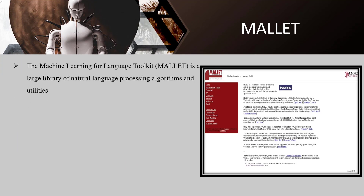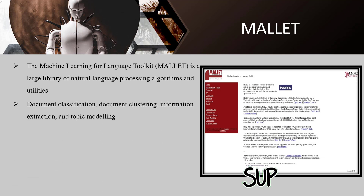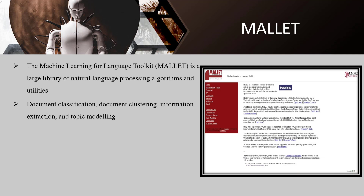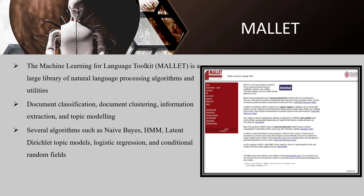MALLET, the Machine Learning for Language Toolkit, is a large library of natural language processing algorithms and utilities. It can be used for document classification, document clustering, information extraction, and topic modeling. It features a command line interface as well as a Java API for several algorithms such as Naive Bayes, HMM, Latent Dirichlet topic models, logistic regression, and conditional random fields. MALLET is available under the Common Public License 1.0, meaning you can even use it in commercial applications.